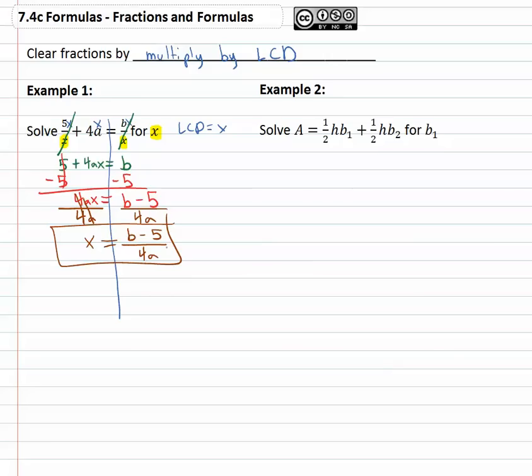Following the same exact process, we're multiplying by the LCD, treating all other variables like numbers. In the second example, this is the formula for the area of a trapezoid, and we're asked to solve for b1.